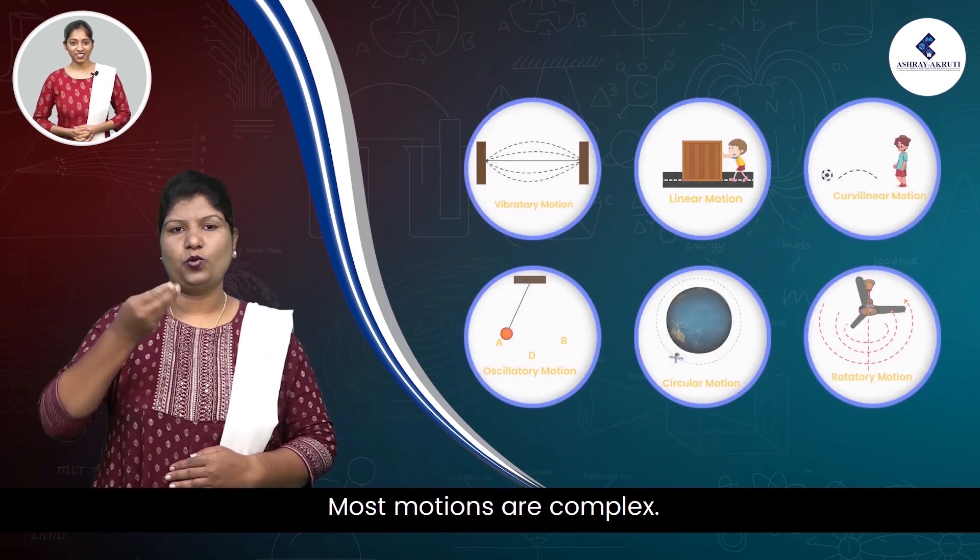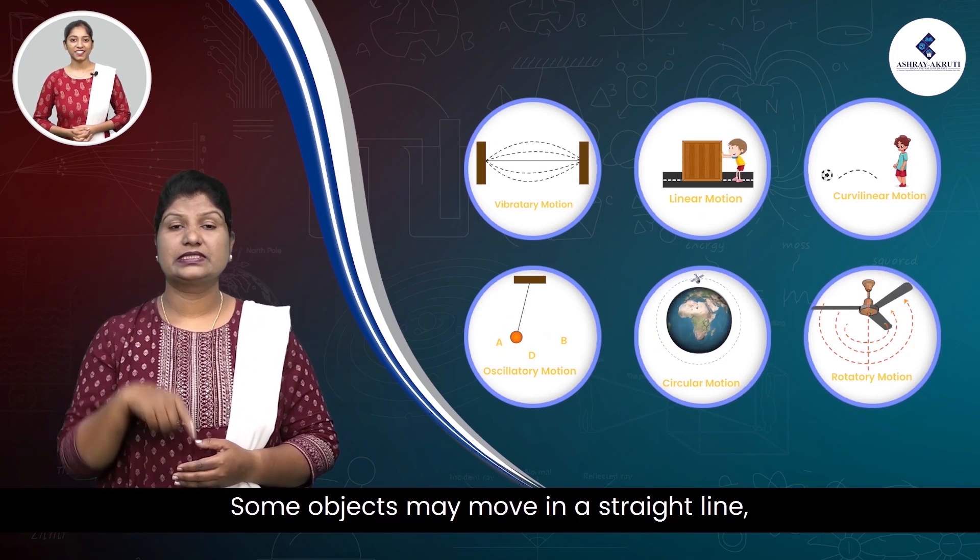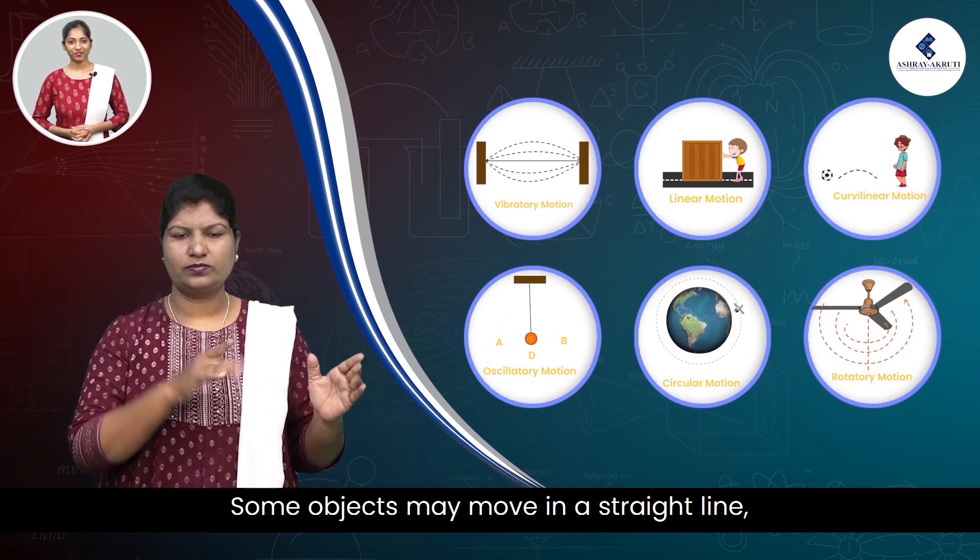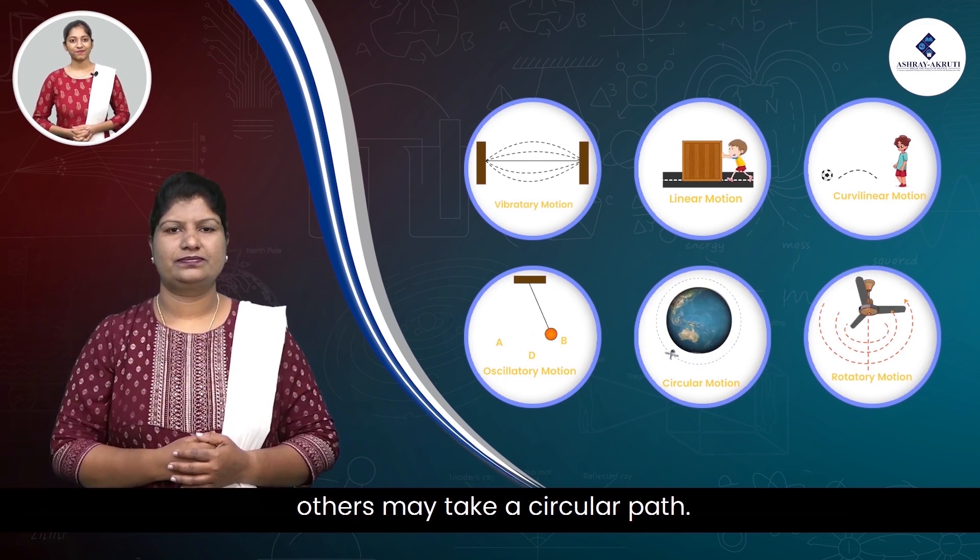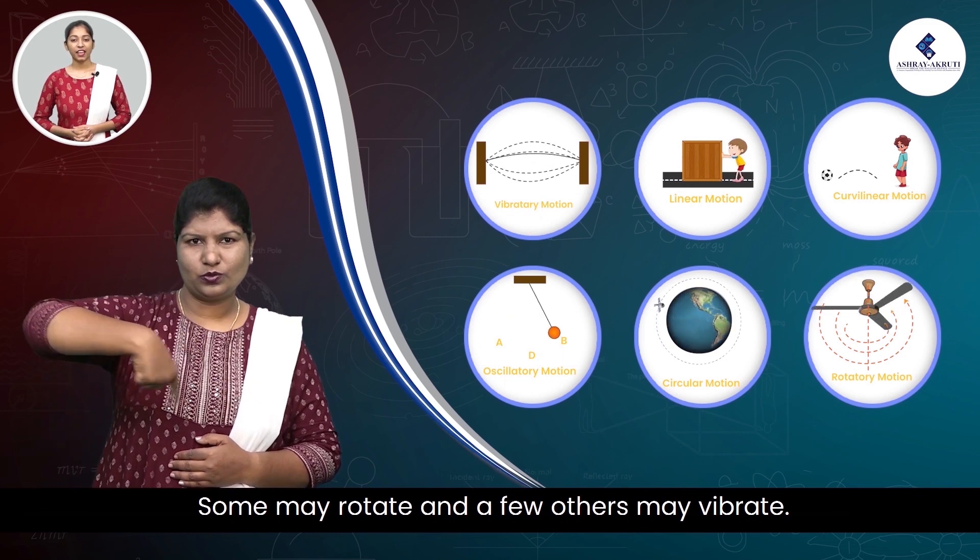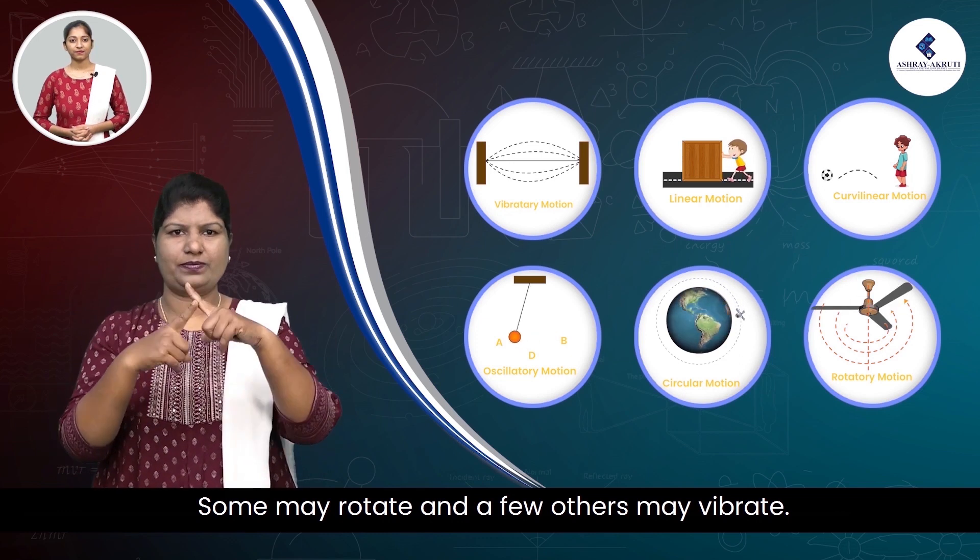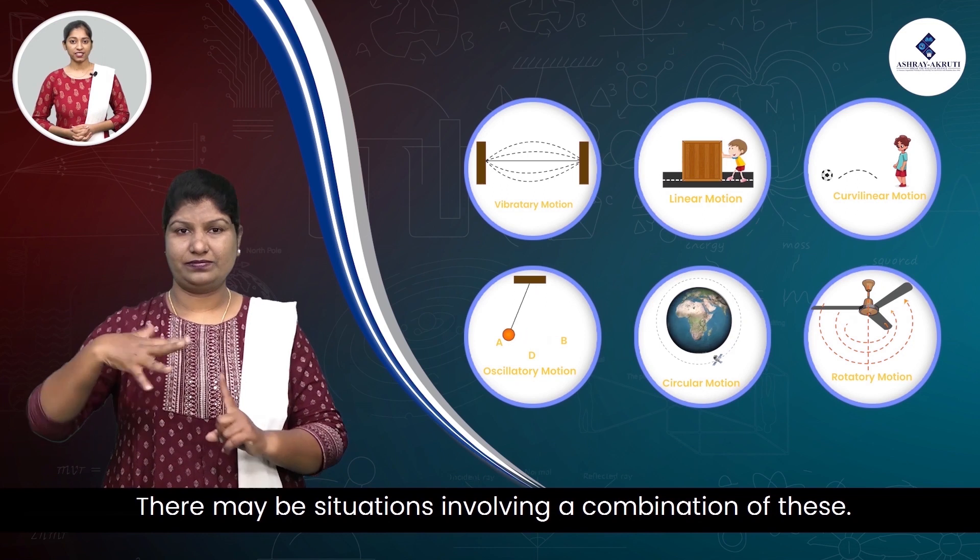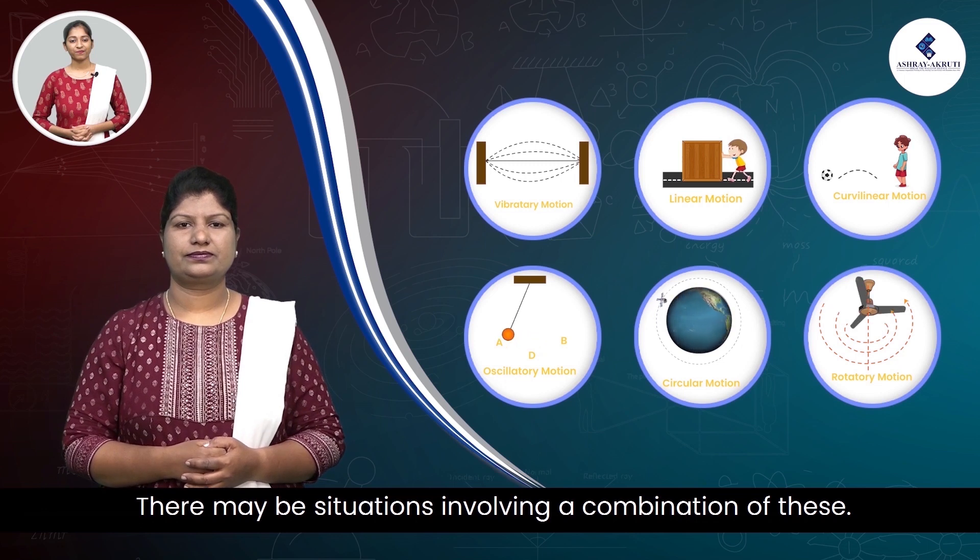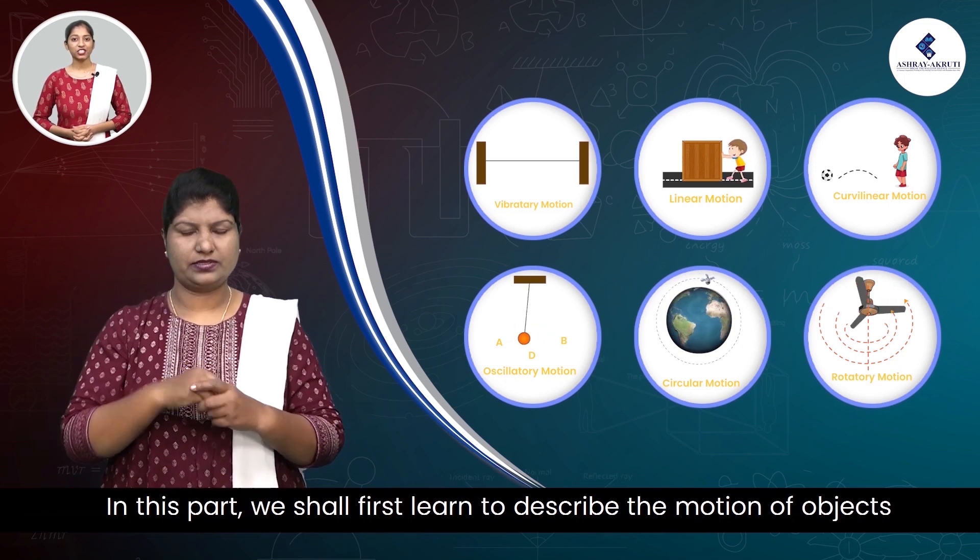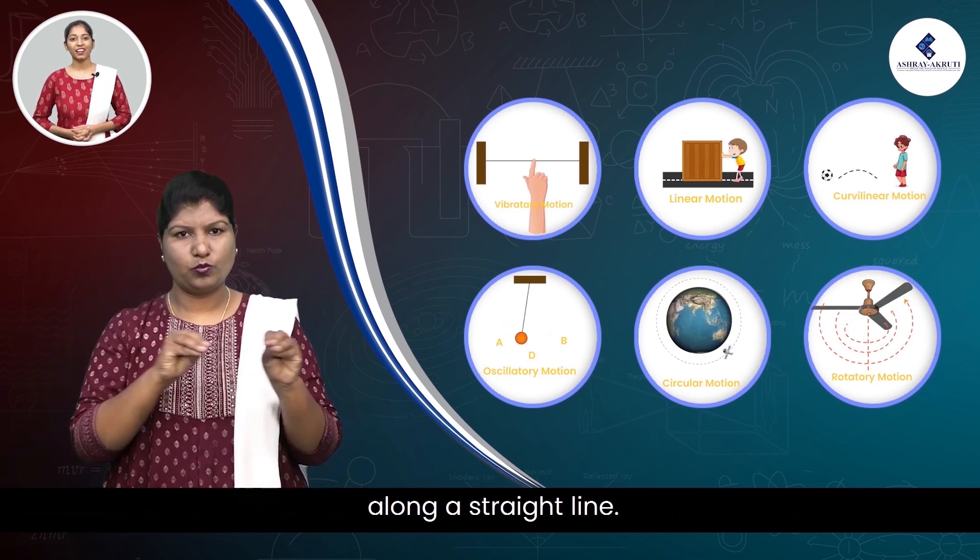Most motions are complex. Some objects may move in a straight line, others may take a circular path. Some may rotate, and few others may vibrate. There may be situations involving a combination of these. In this part, we shall first learn to describe the motion of an object along a straight line.